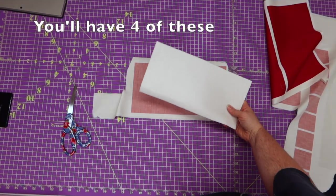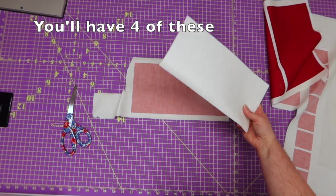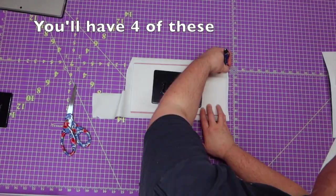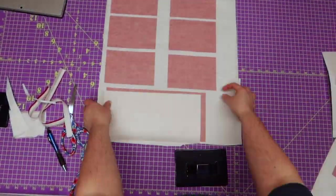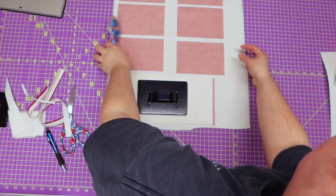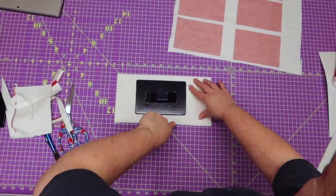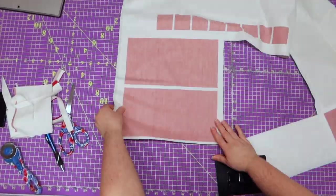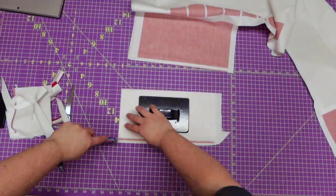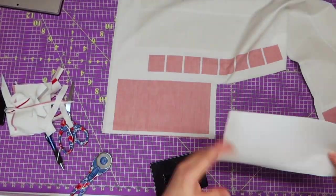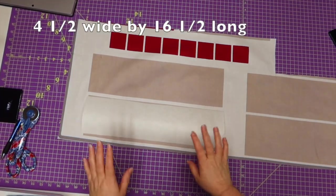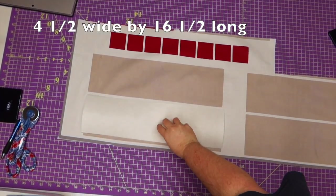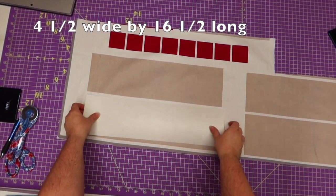Okay, this one is going to be the 11 and a half by 5 and three quarters. All right, so now I'm working on the 4 and a half by 16 and a half piece.